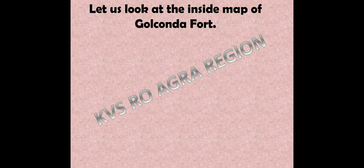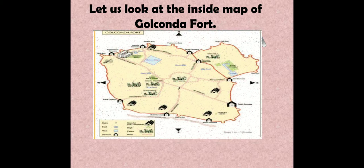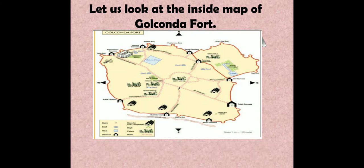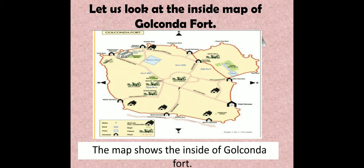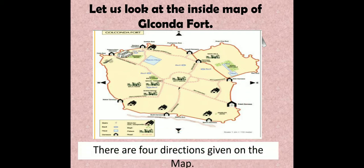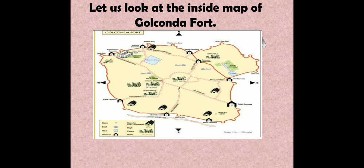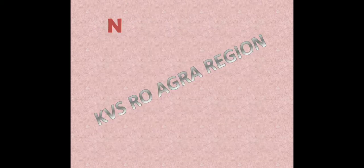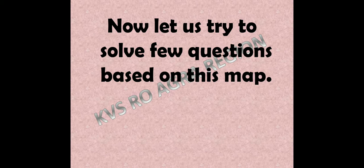Now let us look at the inside map of Golconda fort, which is given in this chapter. This map is given in your books on page number 91. The map shows the inside of Golconda fort. There are four directions given on the map, and the key of the map is also given on the side.